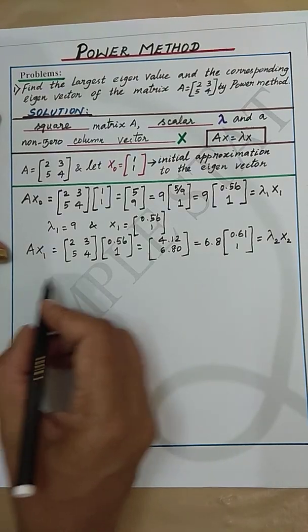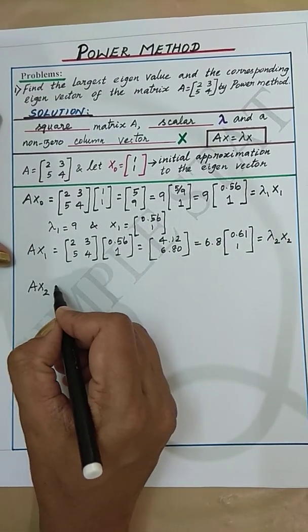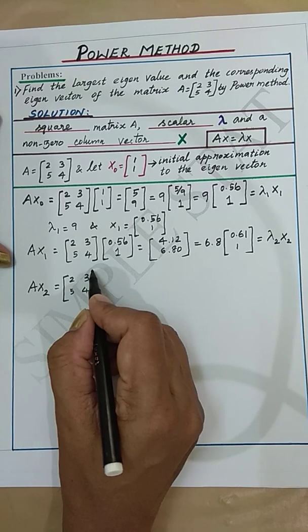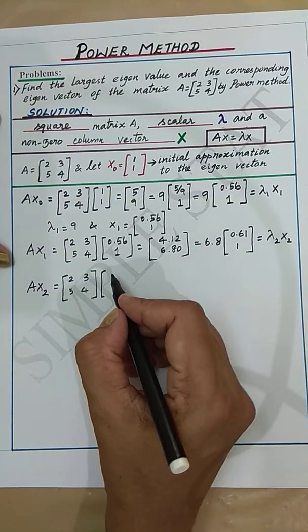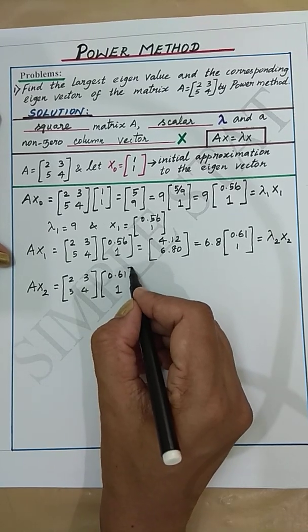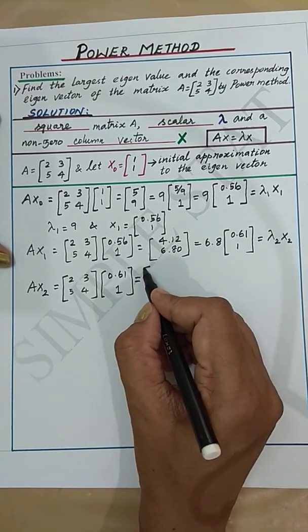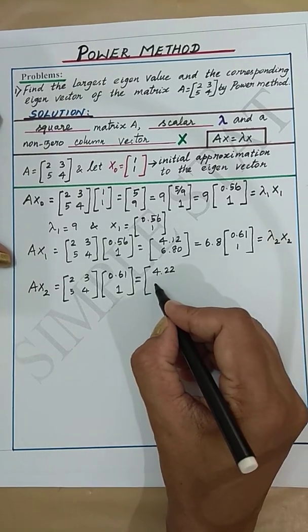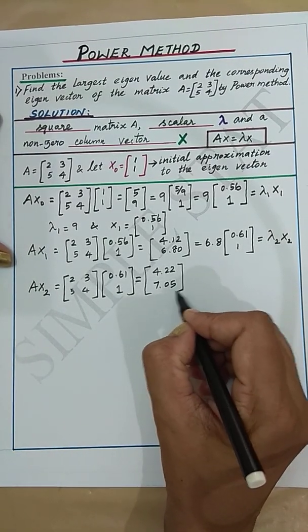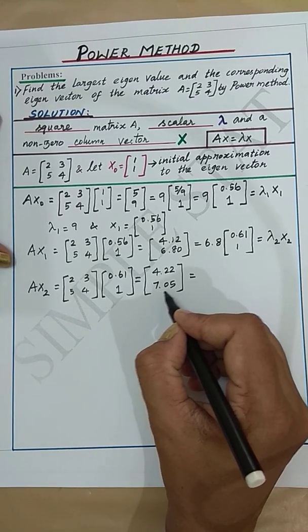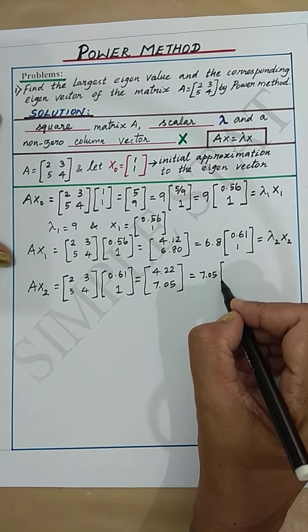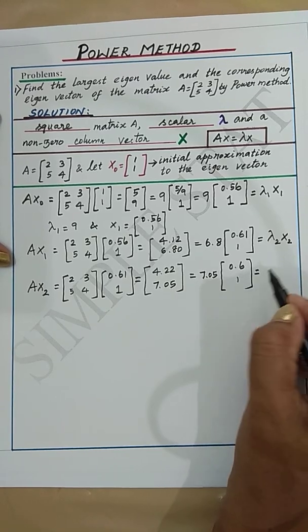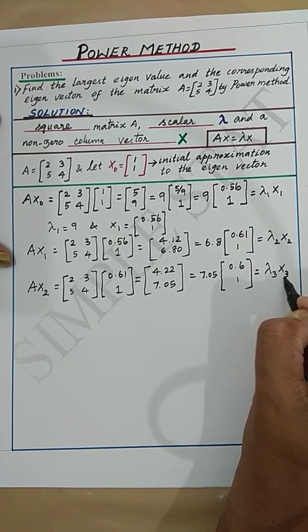Repeating the iteration process we can get AX2 which is [2 3; 5 4] multiplied with X2 [0.6; 1]. Now we get the resultant matrix as [4.22; 7.05]. Taking the largest element 7.05 outside the matrix we get [0.61; 1] which can be written as lambda 3 into X3.